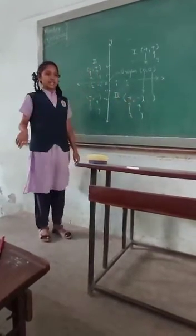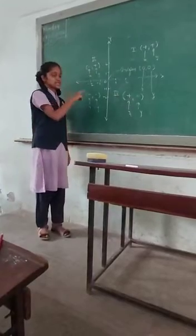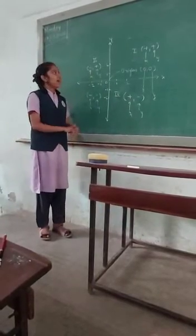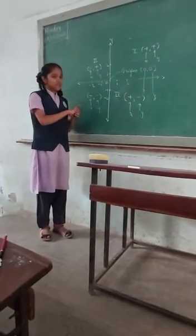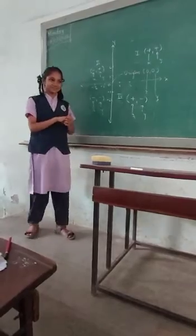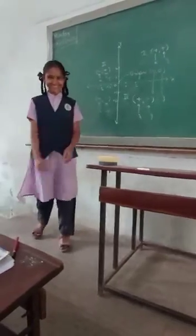Any point that lies on the X axis has a Y coordinate of 0. And any point that lies on the Y axis has an X coordinate of 0.